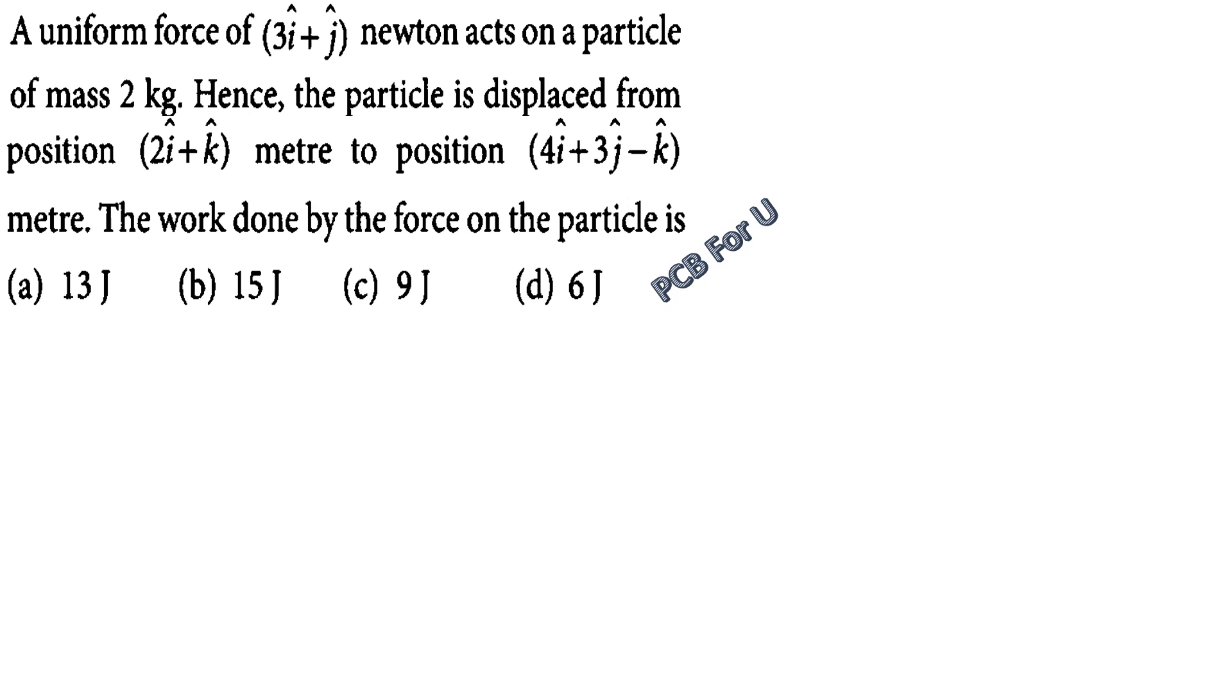A uniform force of 3i cap plus j cap Newton acts on a particle of mass 2 kilogram. The particle is displaced from position 2i plus k cap meter to position 4i cap plus 3j cap minus k cap meter. We need to find the work done by the force on the particle.